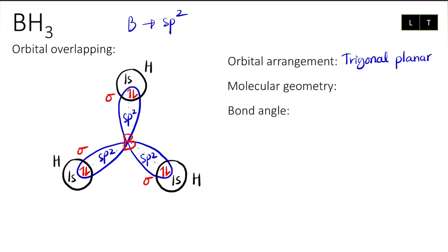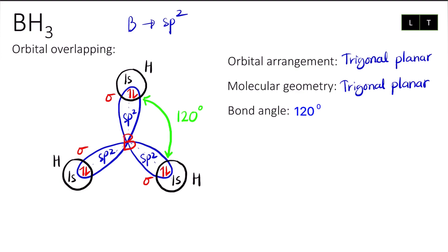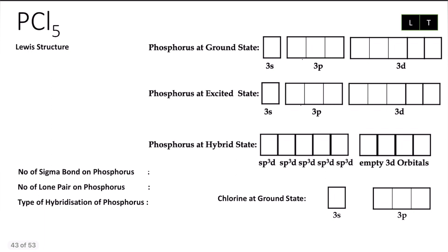The electrons here are for the orbital overlap, and we will indicate these as sigma bonds. The molecular geometry stays the same because there is no lone pair on boron, so I'm going to write the molecular geometry as trigonal planar. The bond angle, based on trigonal planar, is 120 degrees between sigma bond and sigma bond. So that's the orbital overlapping for BH₃ — very simple.